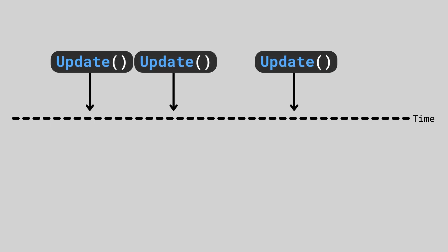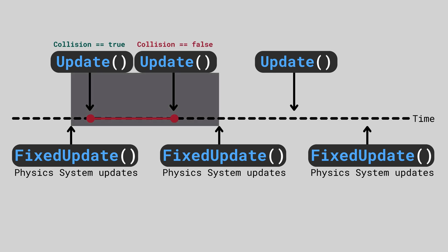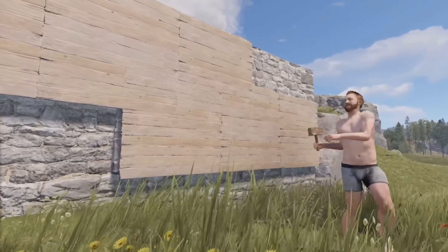But what would happen if we put everything in Update? You'd get some pretty inconsistent behavior, as the physics logic won't be in sync with the physics engine. For example, if a Rigidbody is being controlled with Update and it collides with an object in a frame where Update is called but FixedUpdate is not, the physics engine may not detect the collision. As a result, you could get unexpected behavior like your object passing through other colliders without triggering a collision event.